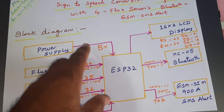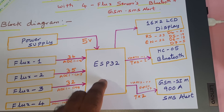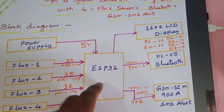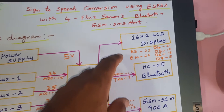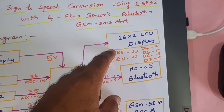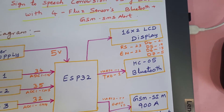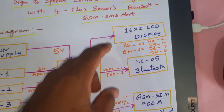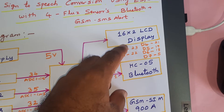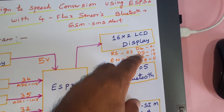One 5-volt power supply module connected to the ESP32 AI Thinker board. A 16x2 LCD display is connected with RS, Enable, D4, D5, D6, D7 — those are connected with GPIO pin numbers 23, 22, 21, 19, and 18.